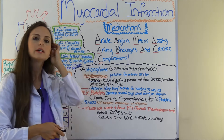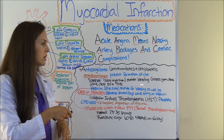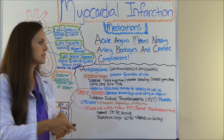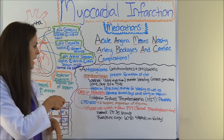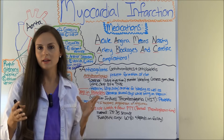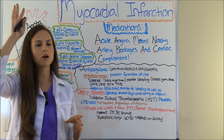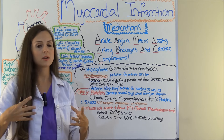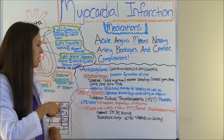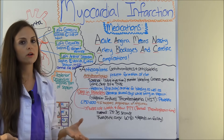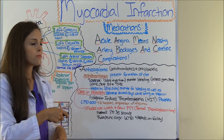Lovenox is usually given as a sub-Q injection. Because it decreases the formation of clots, you've got to watch the patient for bleeding — assess their gums for bleeding, their stool (is it dark and tarry, indicating a GI bleed?), and their urine (is it light pink, suggesting bleeding in the kidneys?). Or watch for a drop in blood pressure and an increase in heart rate — hypotension and tachycardia represent that they're bleeding internally. Heparin can be given as a drip or sub-Q injection, and you'll also monitor for bleeding.